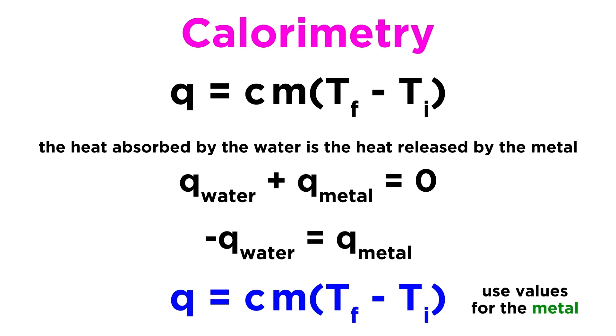With this information, we can plug values into a new equation, but this time using values for the metal. The q value will be the q metal we just got from our calculation for water, but this time the mass will be the mass of the metal, and the change in temperature will go from the initial temperature of the hot metal to the final temperature in the calorimeter. The delta t will therefore be negative this time, which makes sense, as it will cancel out the negative in the q value. The only unknown is the specific heat, so we can then solve for it. Once we add the specific heat, we can hopefully identify the composition of the unknown metal.